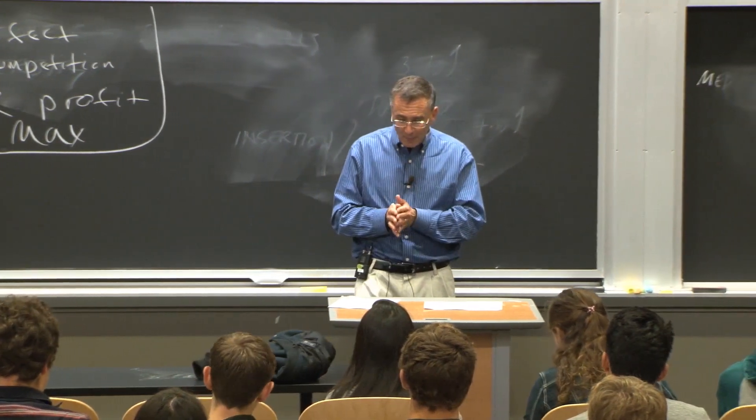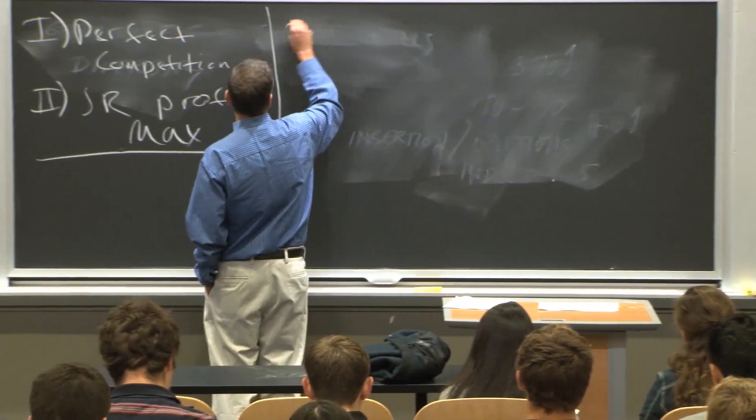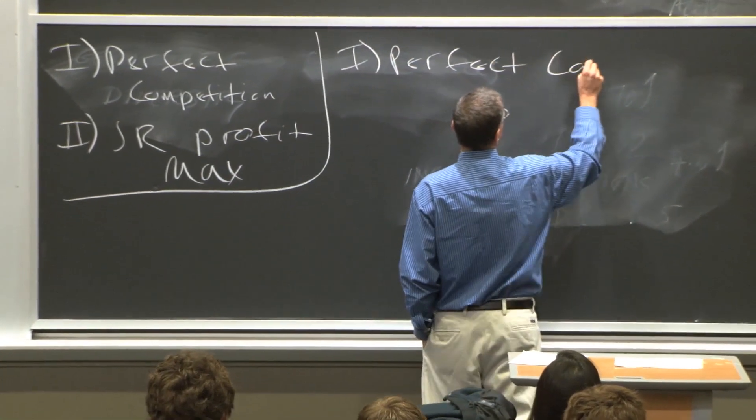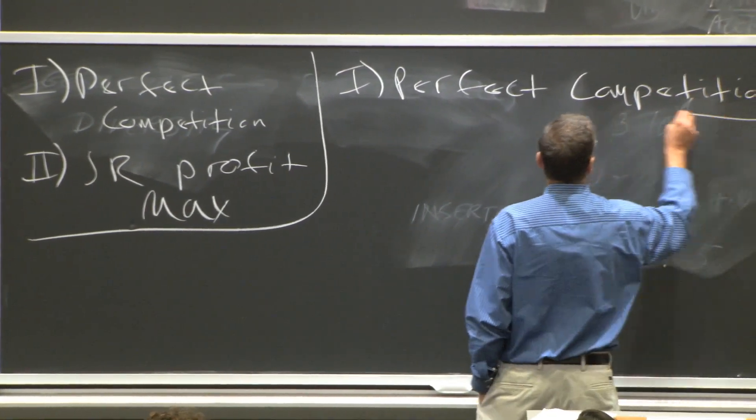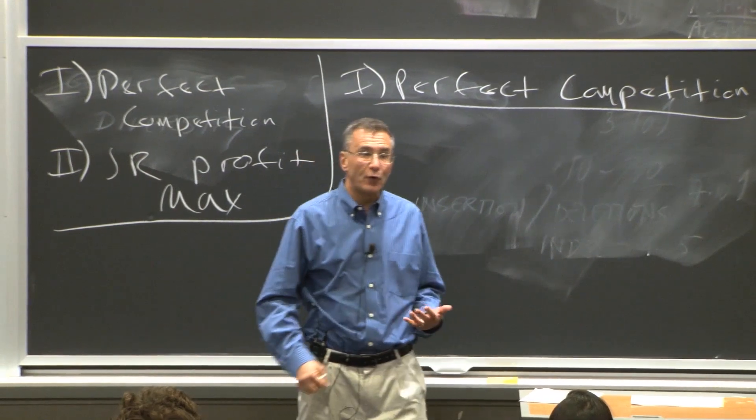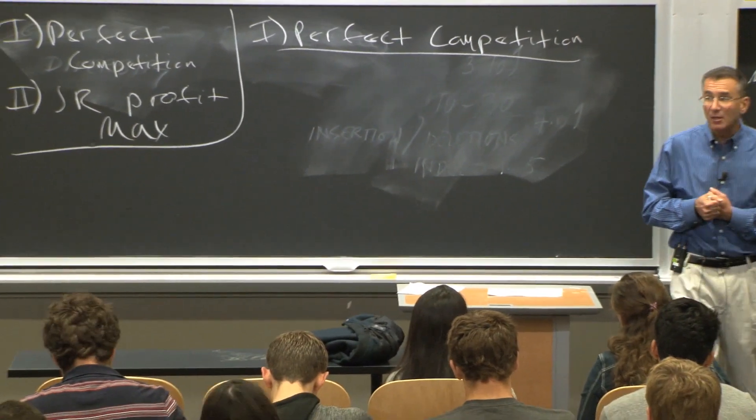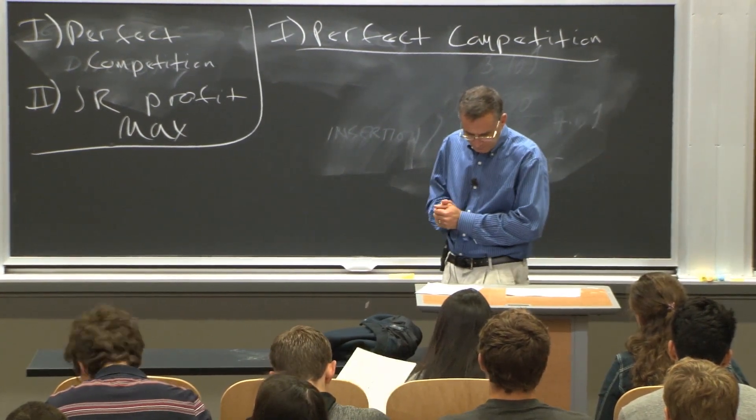We're going to start and spend most of our time on perfect competition. So that's what I want to talk about today. This is sort of the extreme that economists like to focus on, and it's a useful benchmark for thinking about how firms would behave. It's not reality. No extreme is ever reality. But it's a useful starting point for thinking about how firms behave.